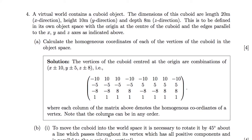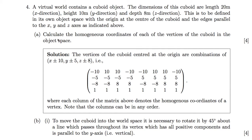Moving on to question 4: a cuboid object in a virtual world with given dimensions, defined in its own object space with the origin at the centre of the cuboid. For part a, calculate the homogeneous coordinates of each of the eight vertices. The cuboid is 20 metres in length, so the x coordinate is plus or minus 10; the y coordinate is plus or minus 5; the z coordinate is plus or minus 8; and the homogeneous fourth coordinate is 1.